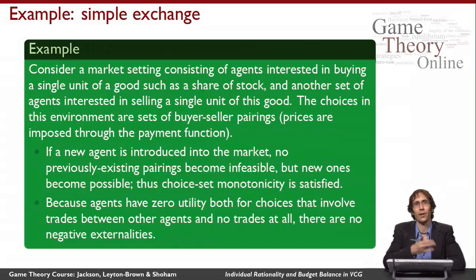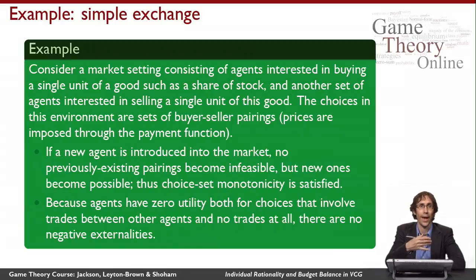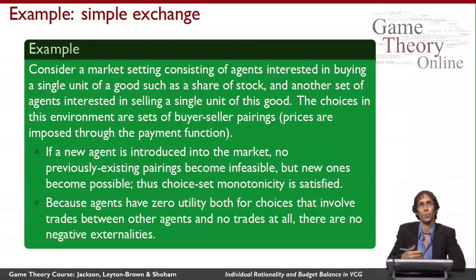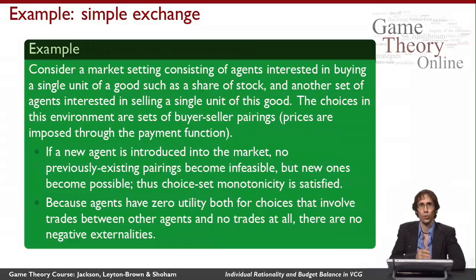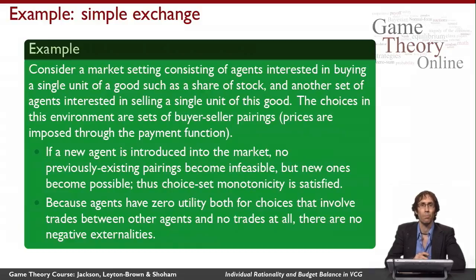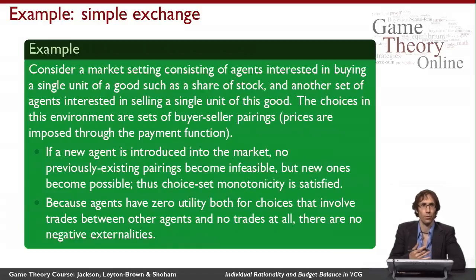If I add a new agent to the market, none of the pairings that worked before go away — I can always set that new person aside — but I can also have that new person participate in trades that weren't possible without them. So choice set monotonicity is satisfied in a more interesting way: new options become available when I add an agent, but no old options get ruled out. And it's natural to assume agents have zero utility both for other people trading and for other people not trading at all, so there are no negative externalities.